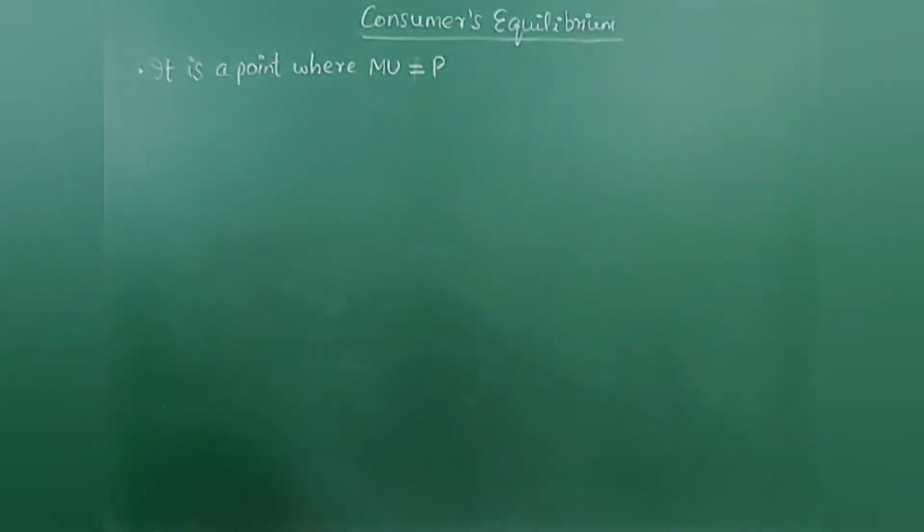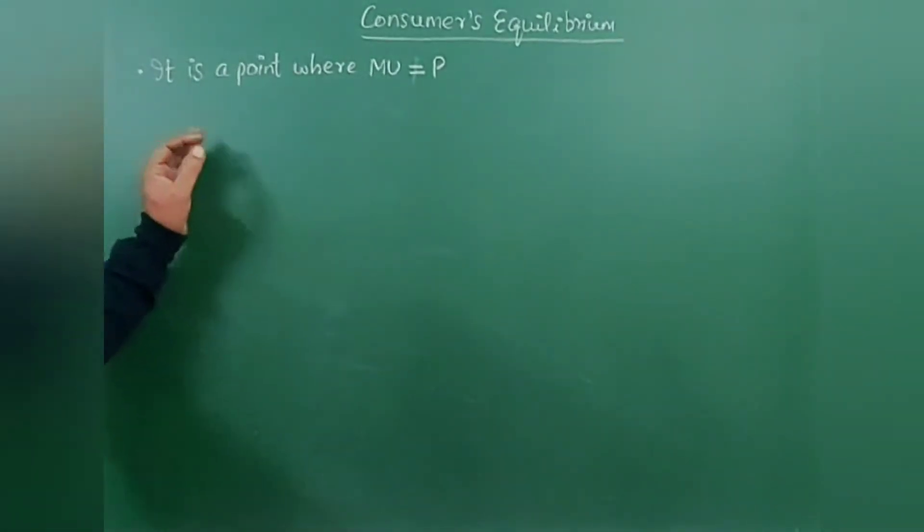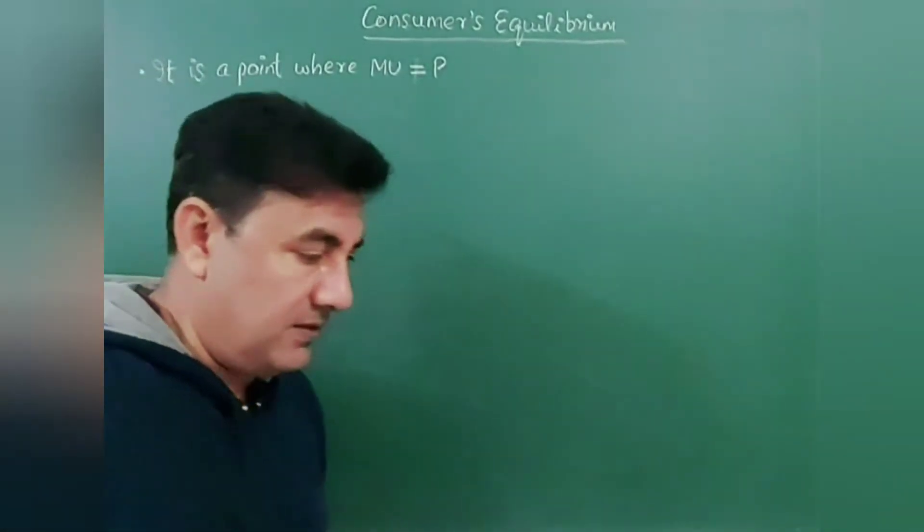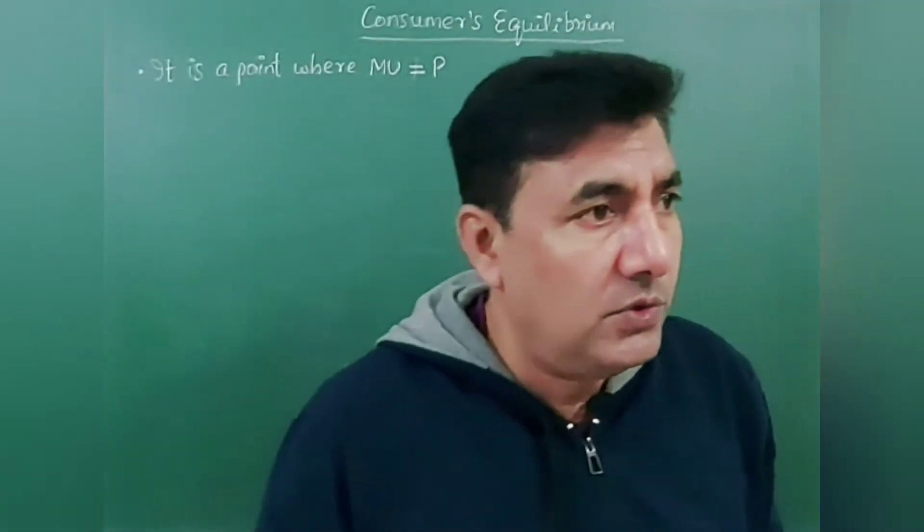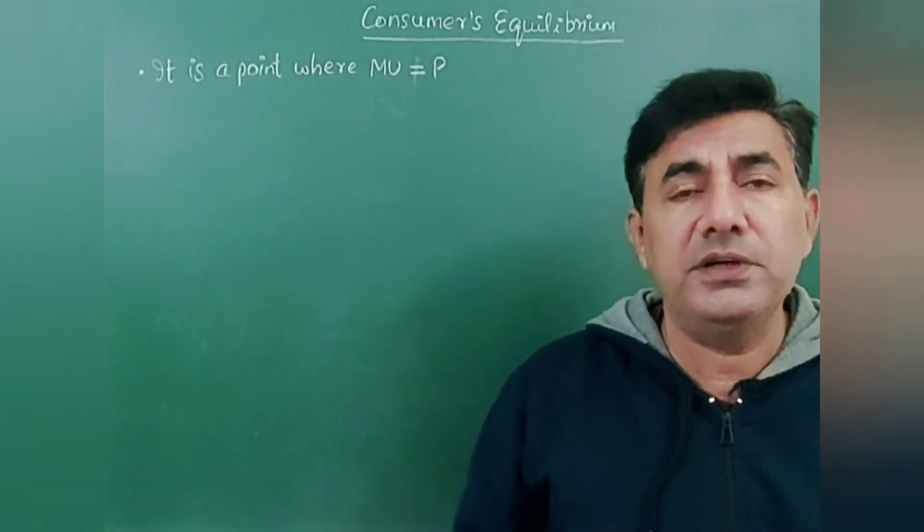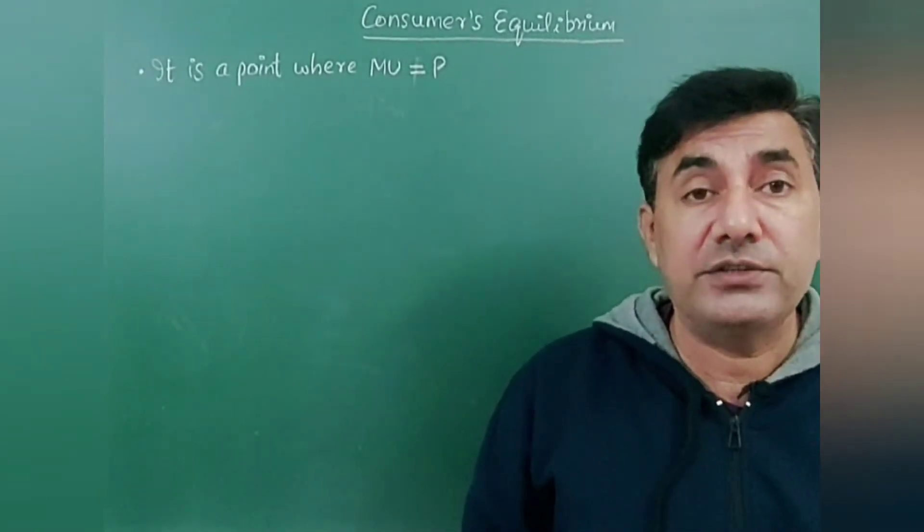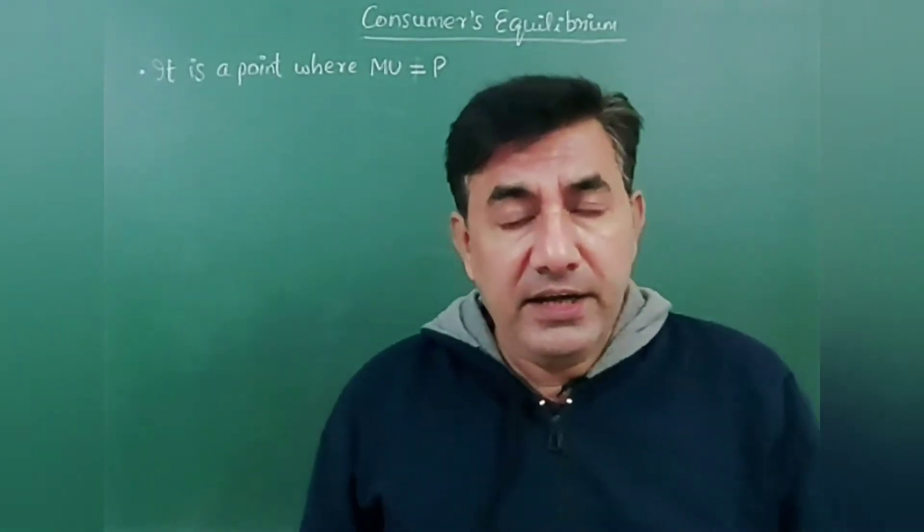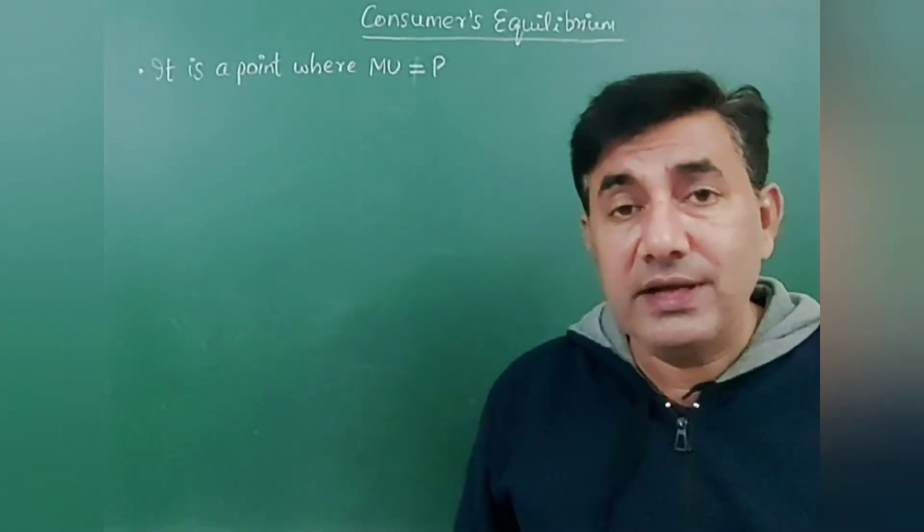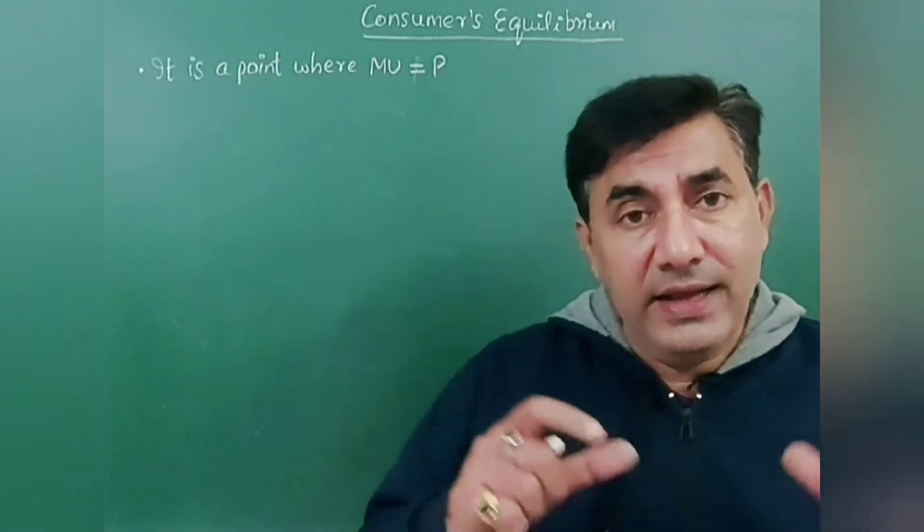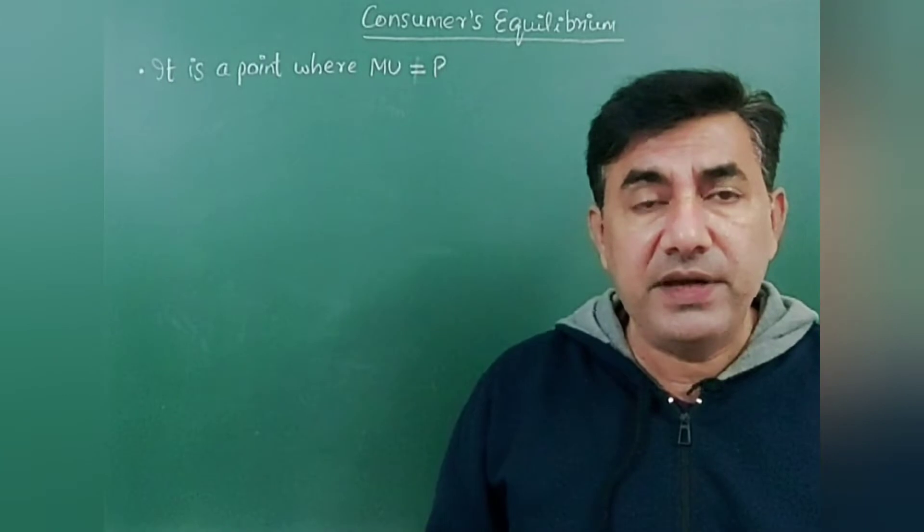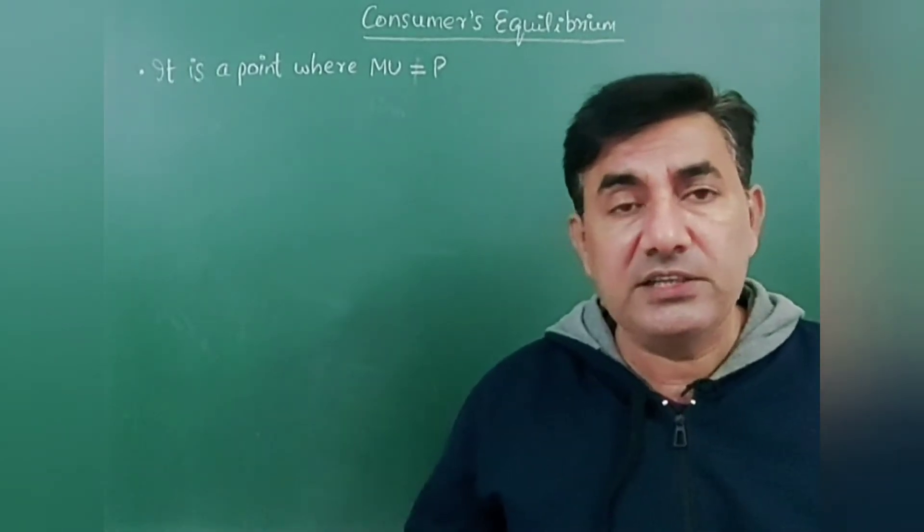What is consumer's equilibrium? Very simple and precise: a point where marginal utility is equal to price. In other words, we can also define it as the point or situation where a consumer gets maximum satisfaction out of his spending, the amount of expenses or consumption that he makes. When that is equal to the satisfaction, the maximum satisfaction, the situation where he gets maximum satisfaction is called consumer's equilibrium.